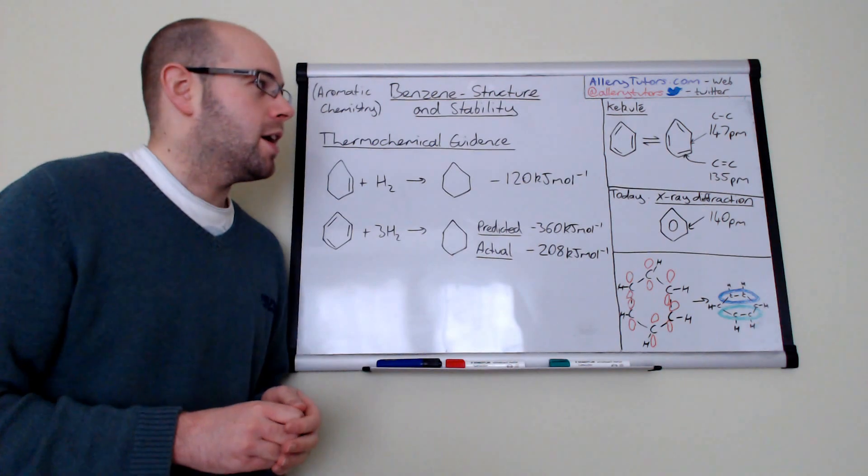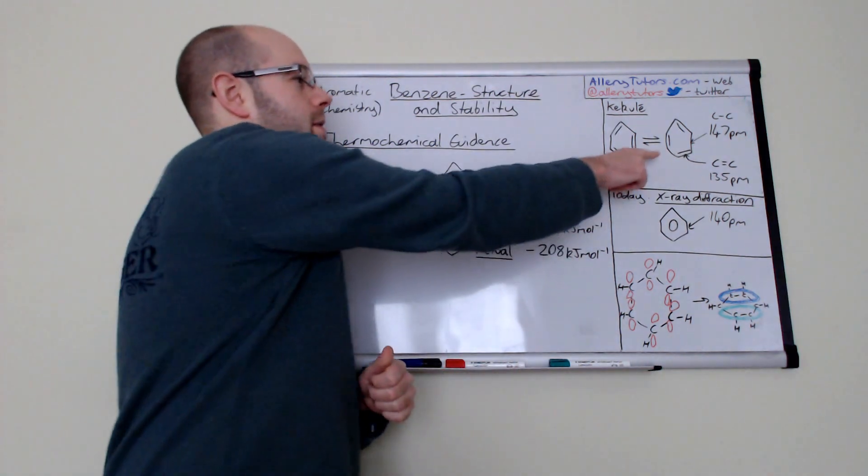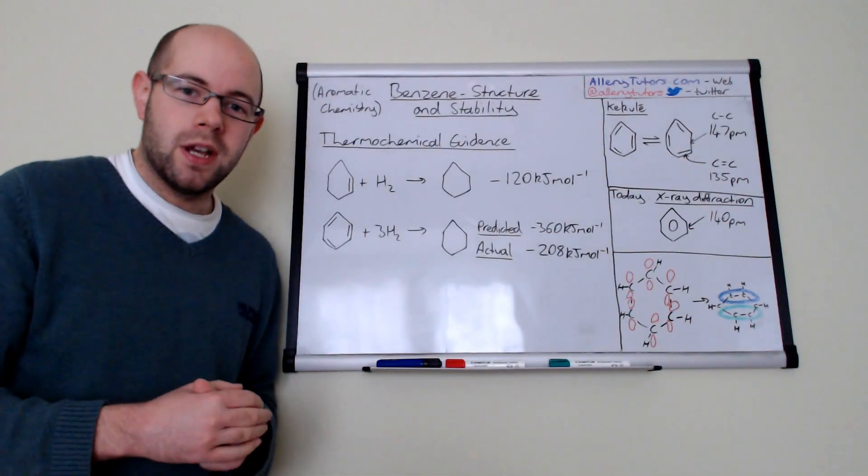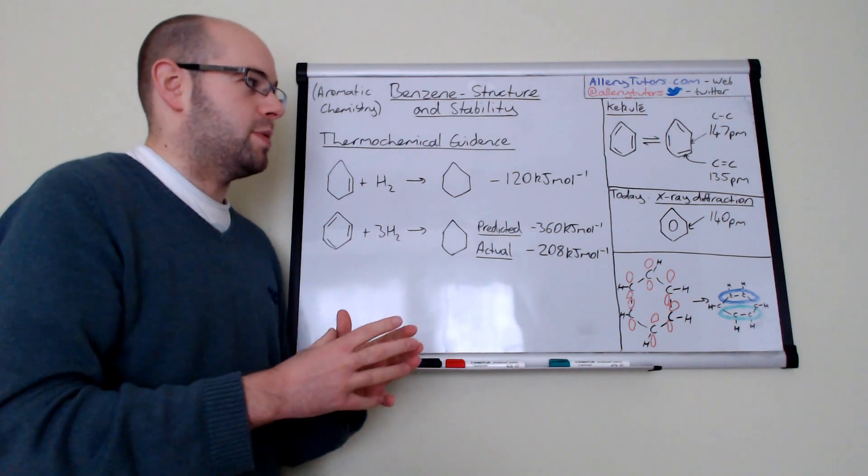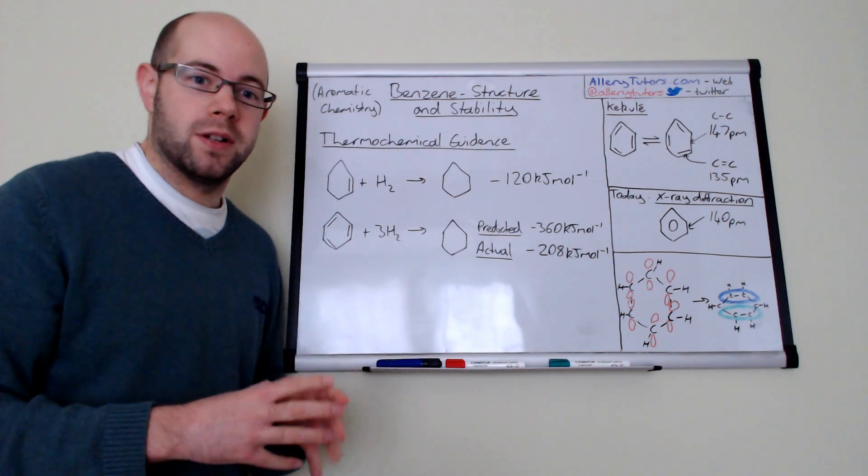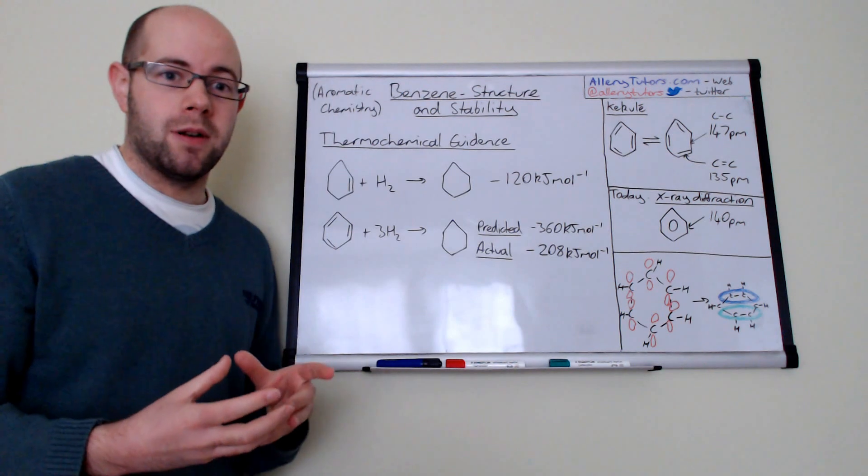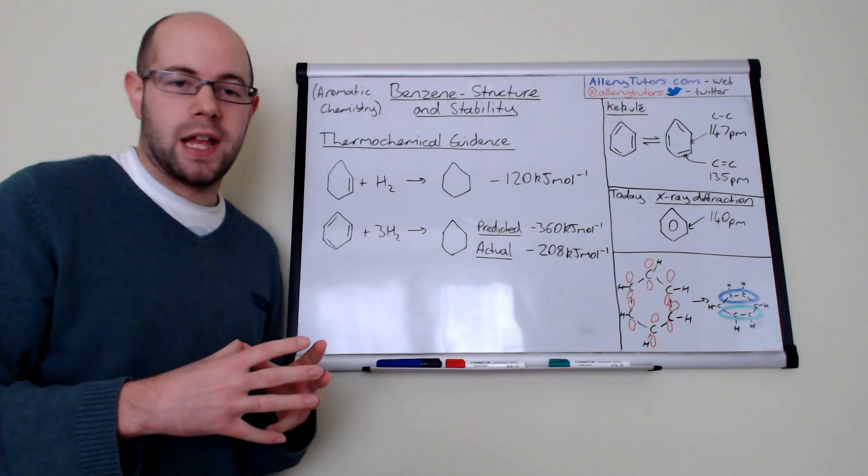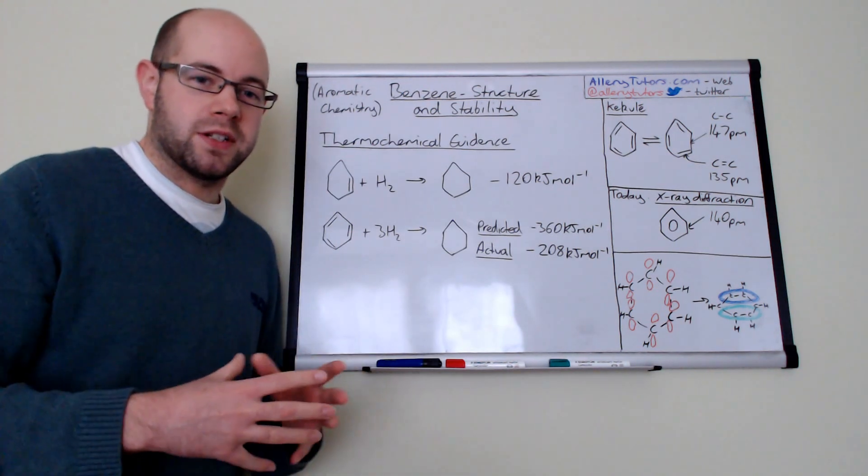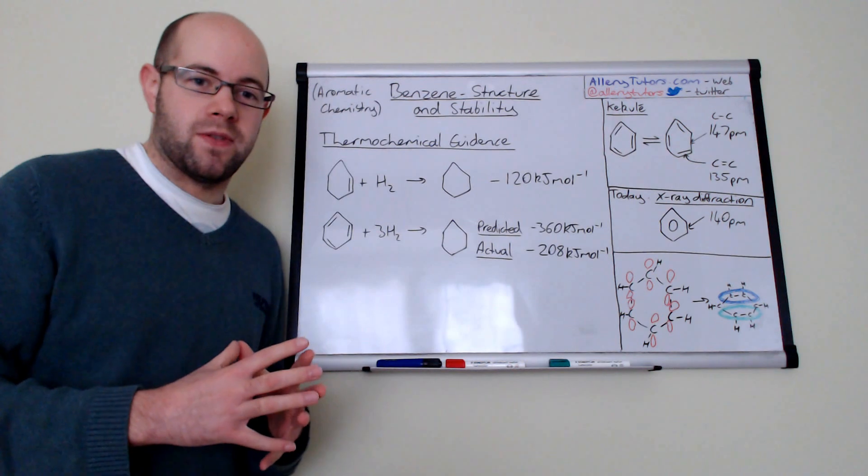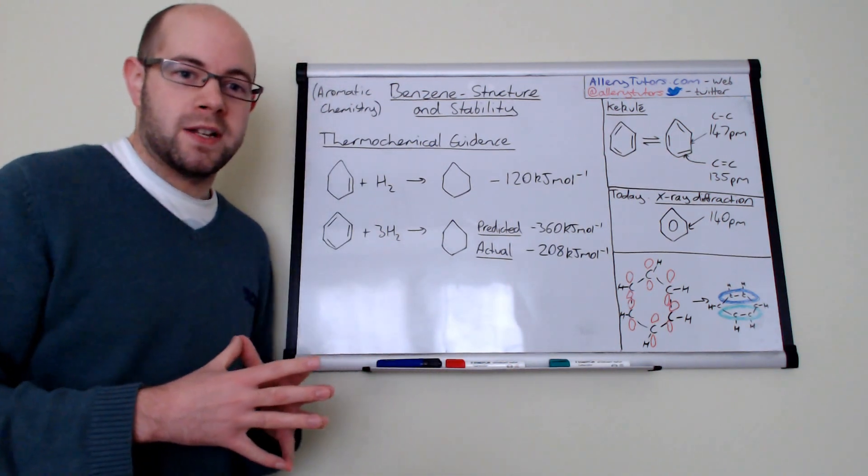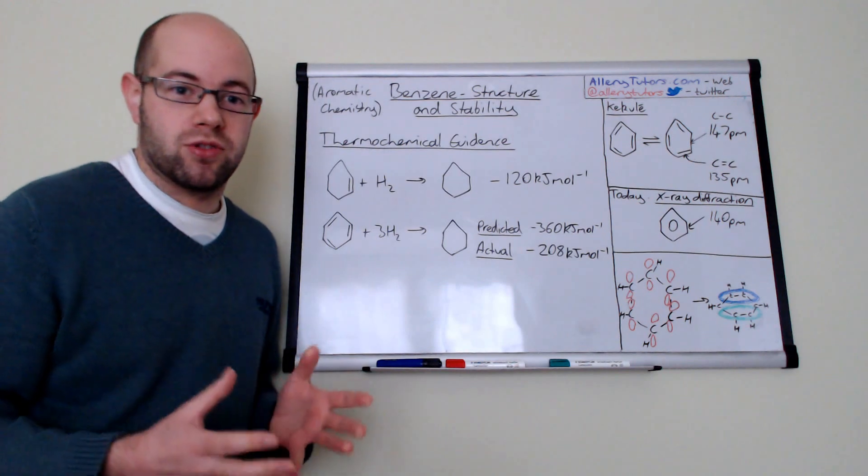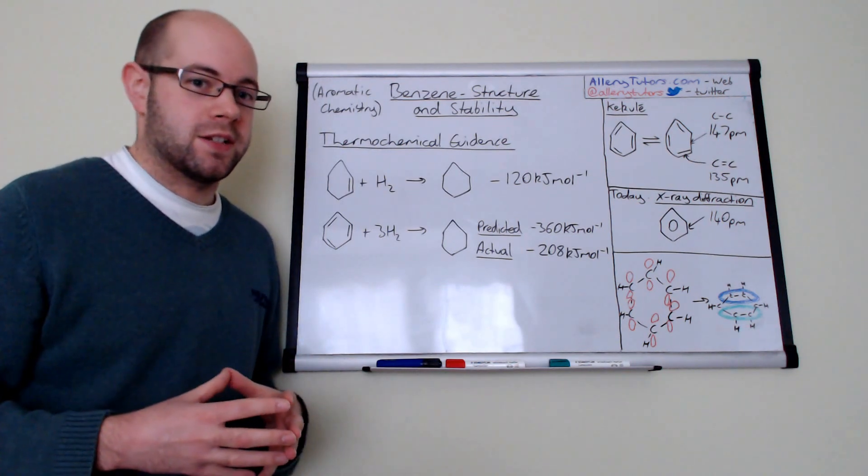Also the fact that if we have double and single bonds our benzene should actually be a little bit skewed, not symmetrical, because we have some short bonds and some long bonds. But it wasn't until we had some more advanced scientific techniques such as x-ray diffraction or x-ray crystallography.